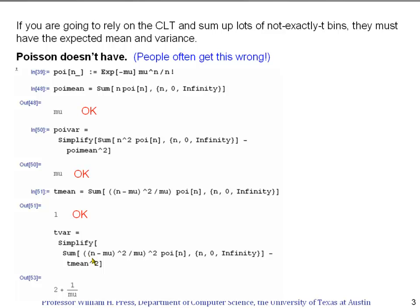Now for the one that's not going to work out: let's check whether we get the right variance. We take our t-value squared, square it again, multiply by the Poisson distribution and sum. Because we want the variance, we compute the expectation of the square minus the square of the expectation. We don't get 2, which would be the right answer. We get 2 plus a correction term of 1 over mu. If the expected number of counts per bin is very large, this 1 over mu becomes negligible. But if even some bins have small numbers of counts, this 1 over mu may not be negligible at all.